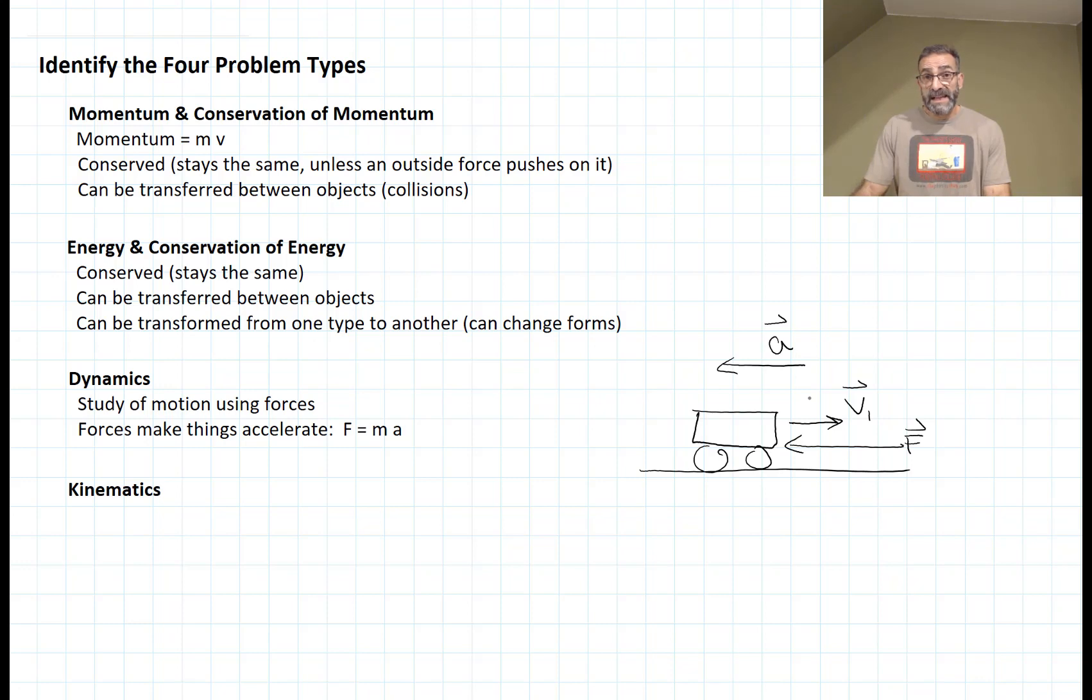When the acceleration and the velocity point in the same direction, we get increasing speed. When the acceleration and the velocity point in opposite directions, we get decreasing speed. And the acceleration always points in the same direction as the net force.